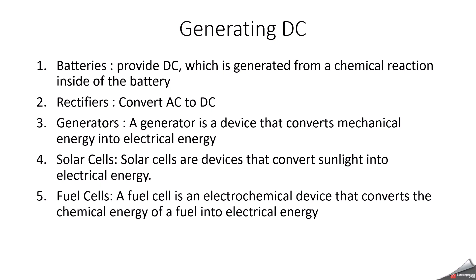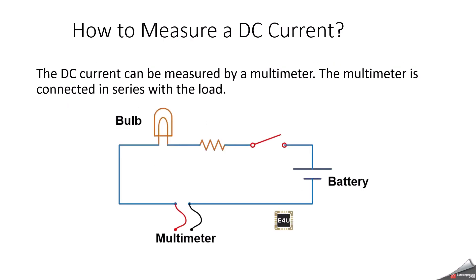These are all the multiple ways we can generate DC. But based on your application, you can decide which one you want to use. Now we can see about how to measure the DC current. You can see in this slide — we have one setup to measure the DC current. DC current will be measured by a multimeter or DC ammeter.